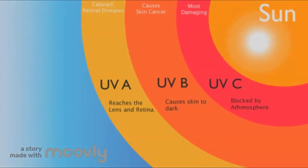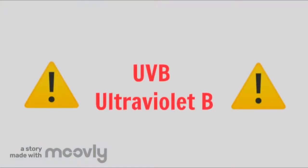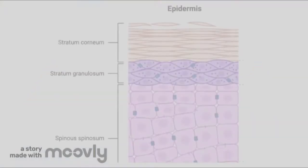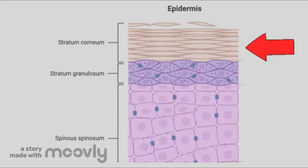Now let's get into how UVR can cause skin cancer. UVR has three subtypes — UVA, UVB, and UVC — categorized by their varying wavelengths. UVB is significantly more dangerous than the other two and is strongly absorbed within the stratum corneum and epidermis of the skin cells.